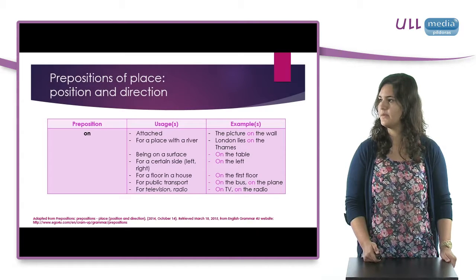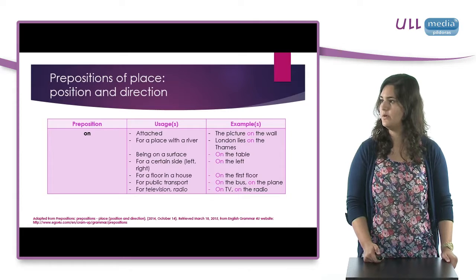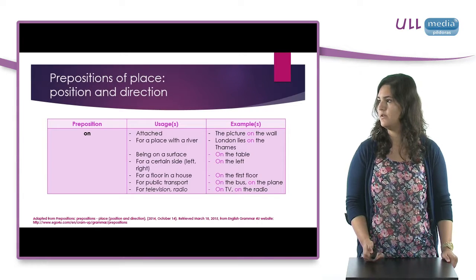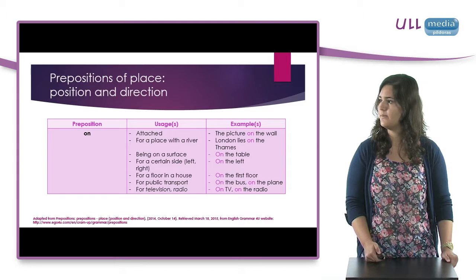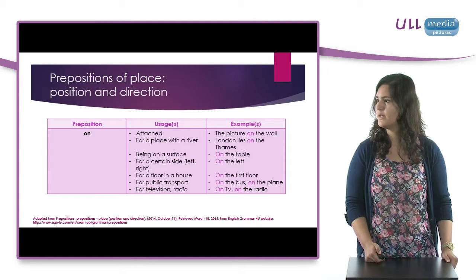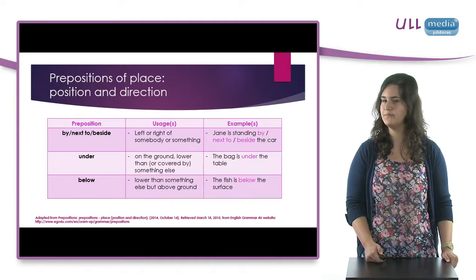The preposition ON, for example attached — the picture on the wall; for a place with a river, for example London lies on the Thames; being on a surface, on the table; for a certain side, for example on the left; for a floor in a house, on the first floor; for public transport, on the bus, on the plane; for television and radio, on TV, on the radio.